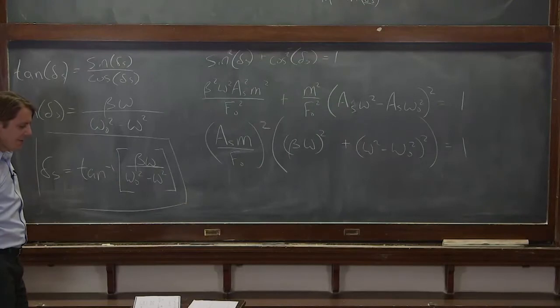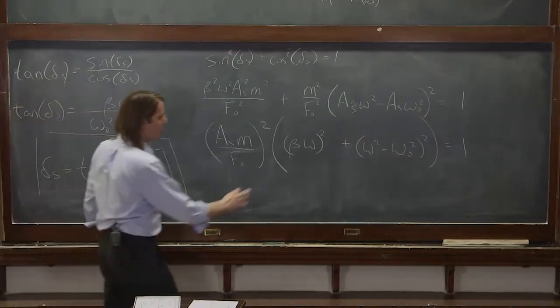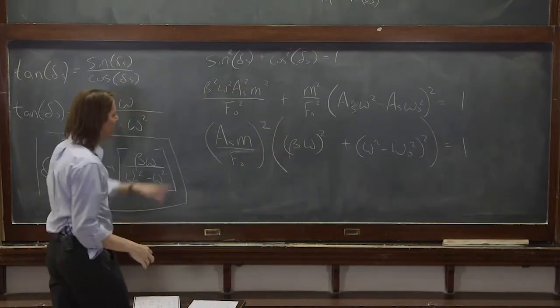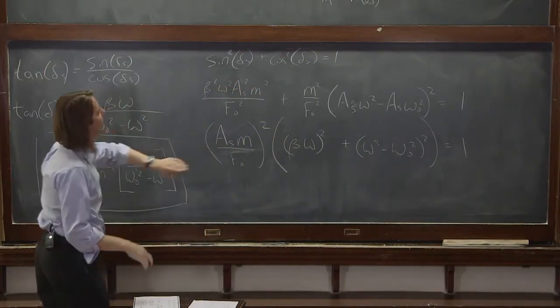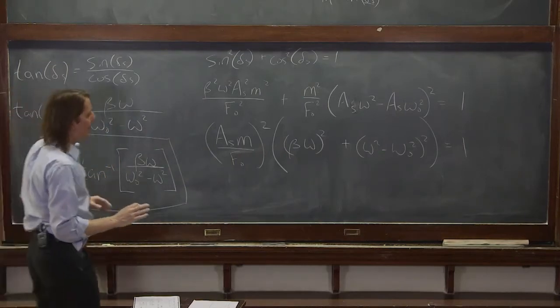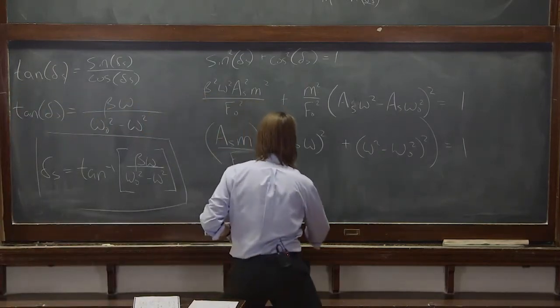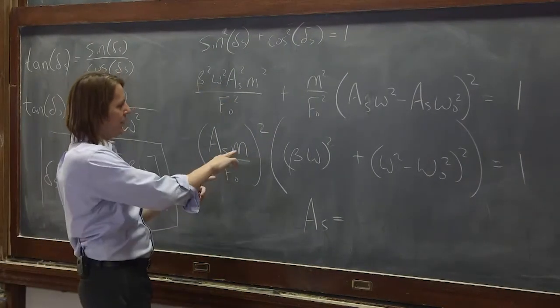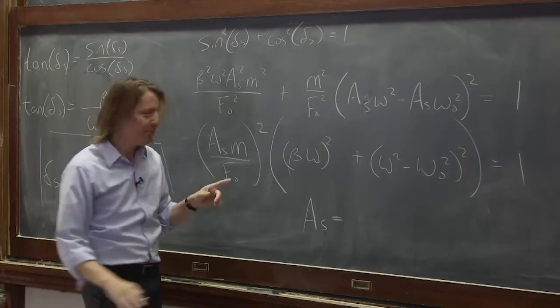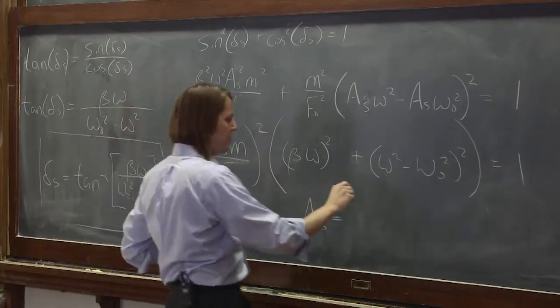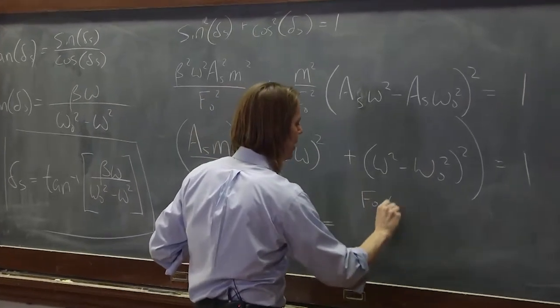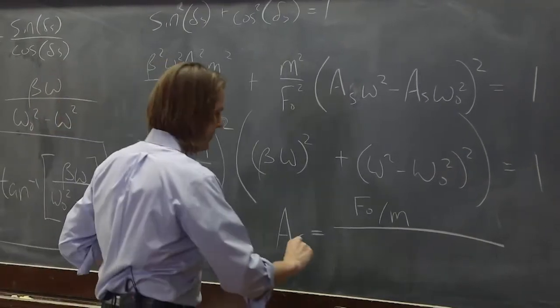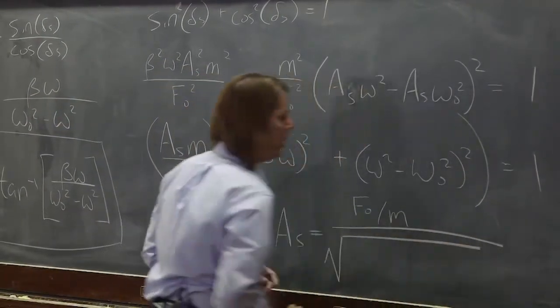And then that you can actually solve for the steady state amplitude. These are all properties of the system here. These are all known quantities. F naught's known. M's known. Everything's known. We can now solve for As. The deltas are gone. No deltas in here. And we can say As equals the steady state amplitude we want equals f naught over M ends up in the top because we're solving for it then taking the square root. So f naught over M is in the top. But the exciting part is in the bottom is the square root of.